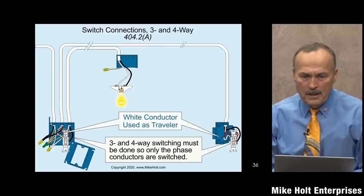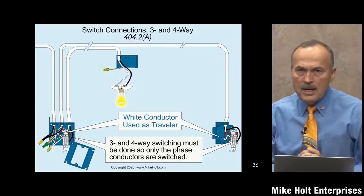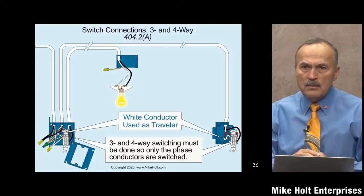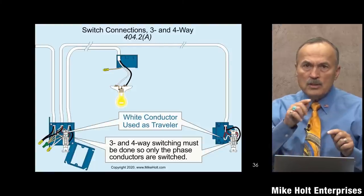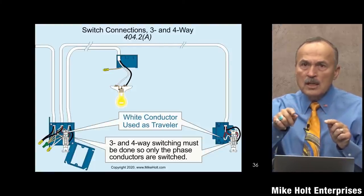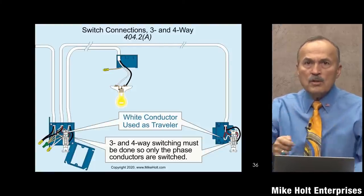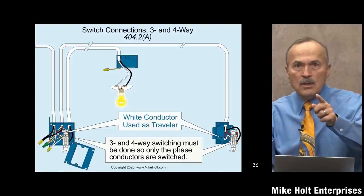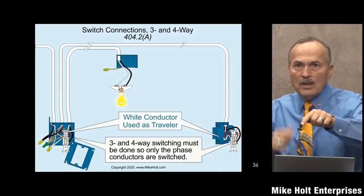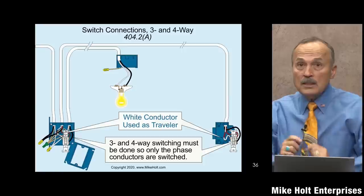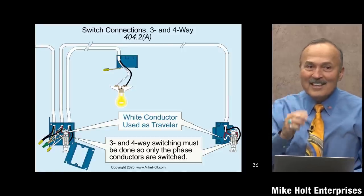Maybe we can show more of a blueprint graphic here — a switch in one location and a switch in another location. For example, if you go into a room and turn on the light, then go to bed and turn off the light from another location, you're switching it in two locations — that's called three-way.